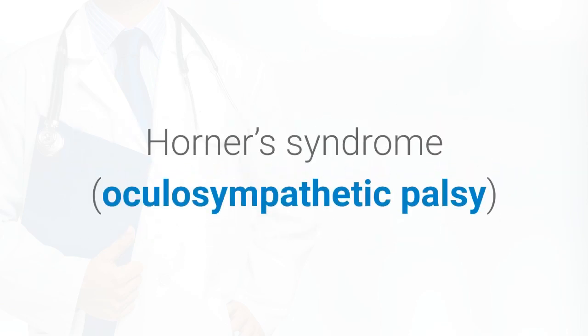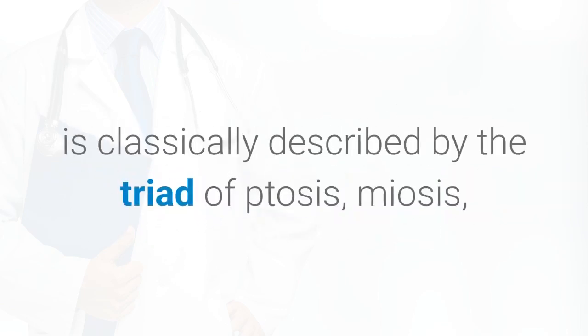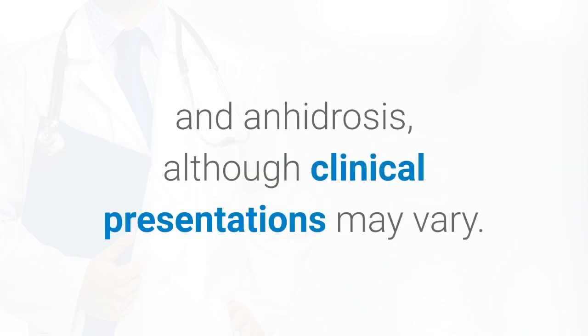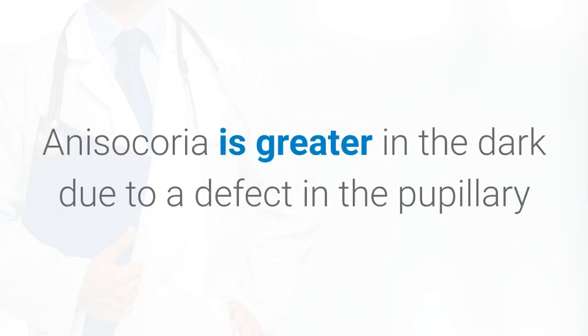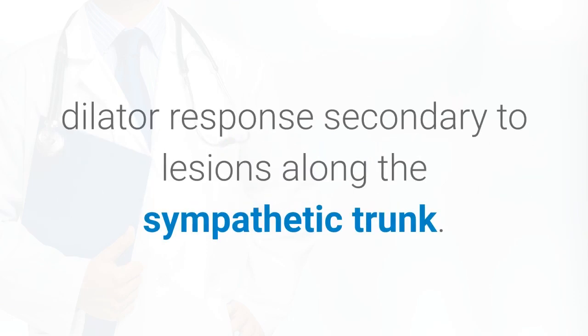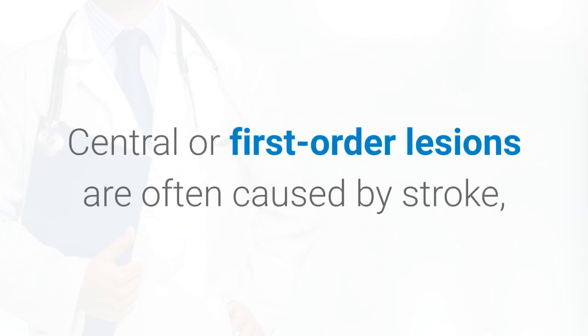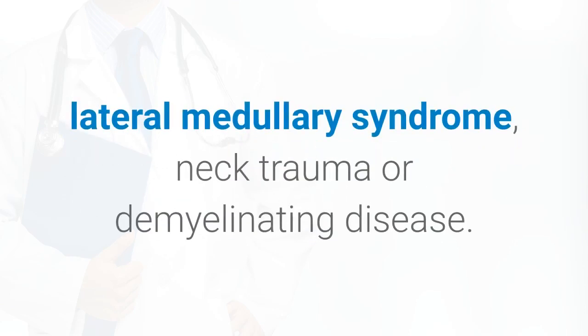Horner's syndrome is classically described by the triad of ptosis, miosis, and anhydrosis, although clinical presentations may vary. Anisocoria is greater in the dark due to a defect in the pupillary dilator response secondary to lesions along the sympathetic trunk. Central or first-order lesions are often caused by stroke, lateral medullary syndrome, neck trauma, or demyelinating disease.